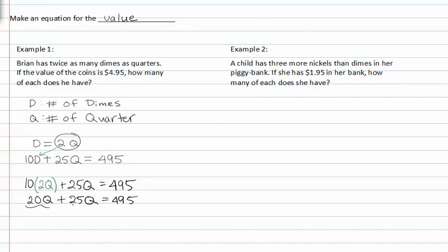Adding my like terms together, I get forty-five q equals 495. Dividing by forty-five on both sides, q is equal to eleven.